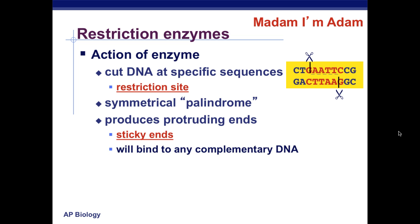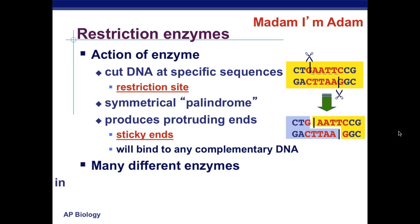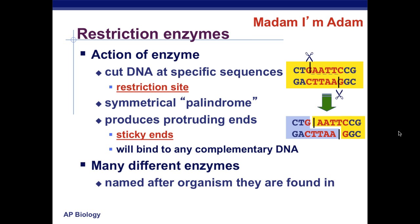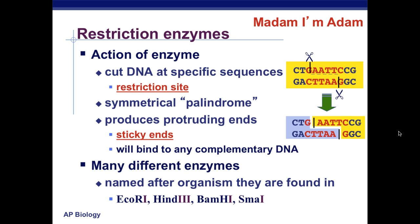When we cut it, we cut at the same site and produce protruding ends, also known as sticky ends. These sticky ends will bind to any complementary DNA, allowing it — like a puzzle piece — to fit into another area. There's more than one enzyme we can use to cut. The enzymes were named after the organisms they were found in: you've got EcoRI, HindIII, BamHI, and SmaI.